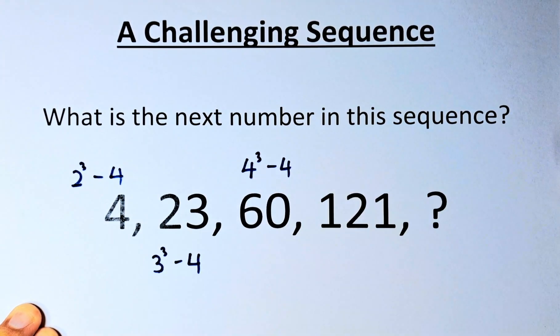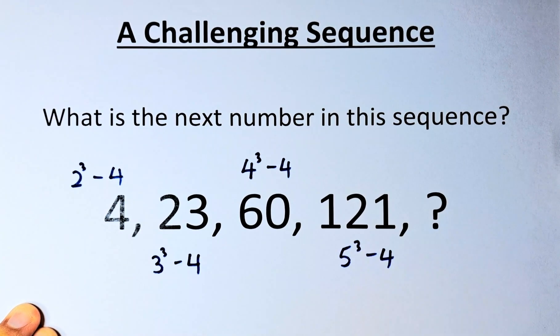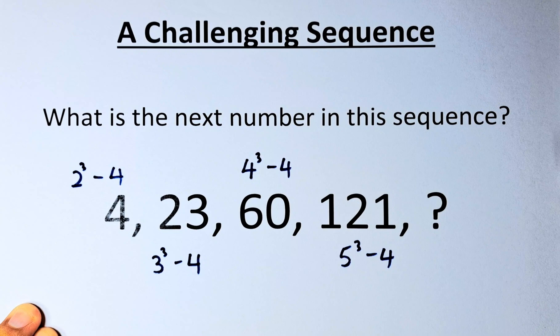4 cubed is going to be 64. 64 minus 4 is 60. And 121 is going to be 5 cubed minus 4. 5 cubed is 125 minus 4 is 121.